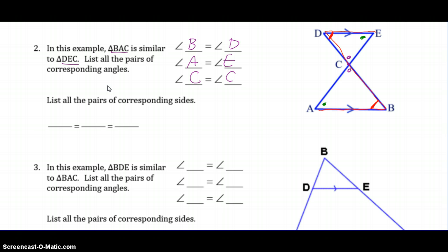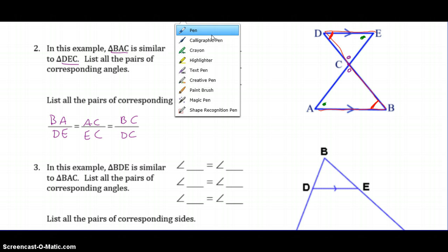So to match up those corresponding sides, I would start by looking at my similarity statement and going first two letters, BA, over first two letters, DE, last two letters over last two, and then first and last over first and last.